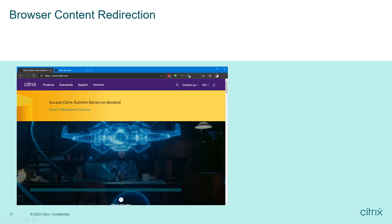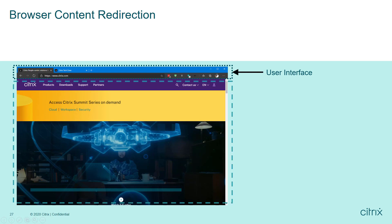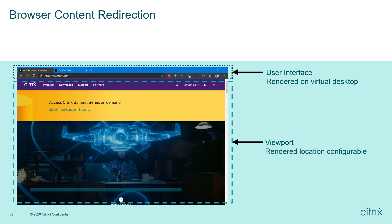Browser content redirection examines the user's browser and distinguishes between the user interface and the viewport. The interface is always rendered on the virtual desktop and transmitted to the endpoint's display, while the viewport can be rendered on the virtual desktop or on the endpoint.